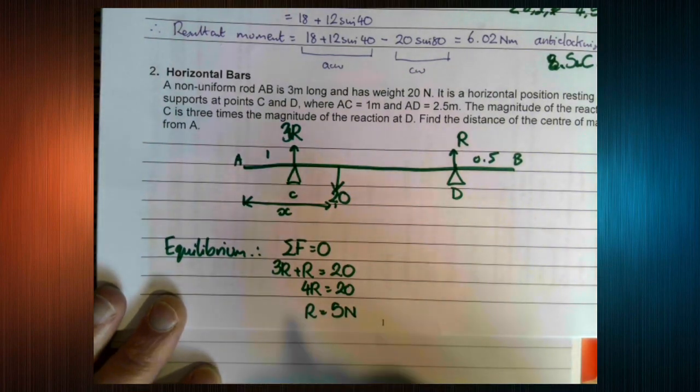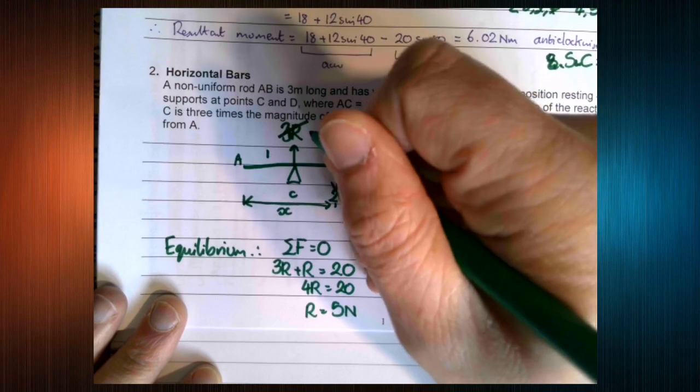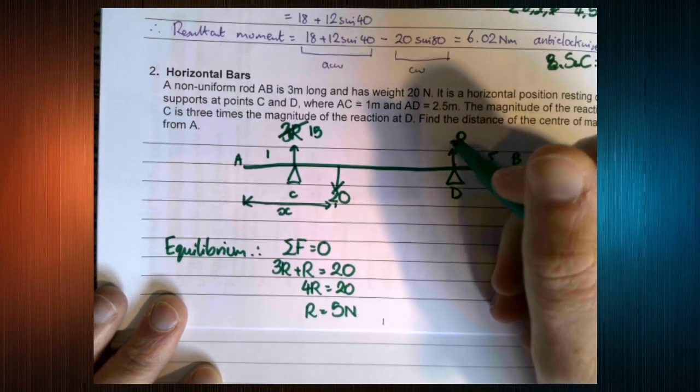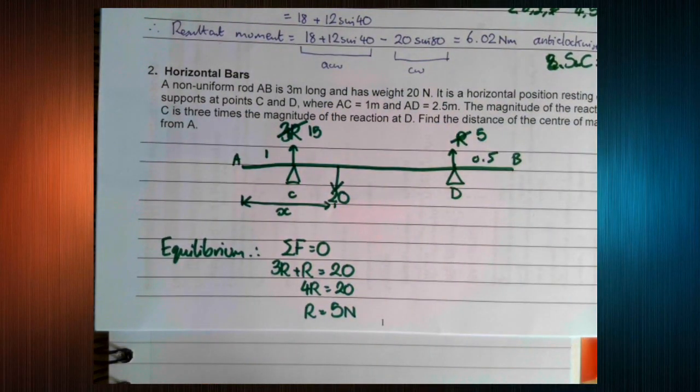The resultant force is zero, which means that 3R plus R must equal 20. So that tells us R is 5 newtons. This is useful because we can edit our diagram.